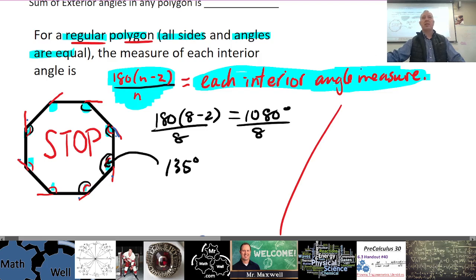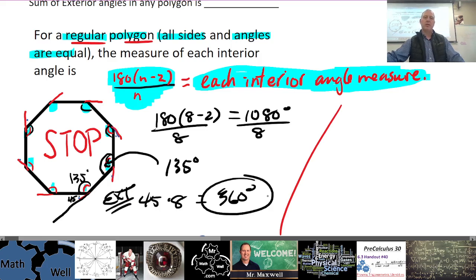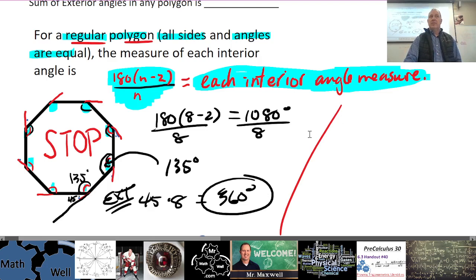Now thinking about the exterior angle — if the interior angle is 135 degrees, the exterior angle is 180 minus 135, which equals 45 degrees. And 45 times 8 equals 360 degrees. So the sum of the exterior angles is confirmed to be 360 degrees.